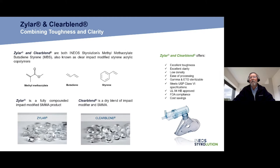Both Xylar and ClearBlend have excellent toughness, great clarity, low density, ease of processing, and that's the feedback that we get from all of our customers. When any of them switch from a polycarbonate or a PETG to a Xylar or a ClearBlend, they are very happy and excited because it's just an easy product to process. They're both Gamma and ETO sterilizable. They both meet USP Class 6 medical specifications. The two of them are UL94HB and FDA compliant. And generally, they will result in cost savings for your customers.